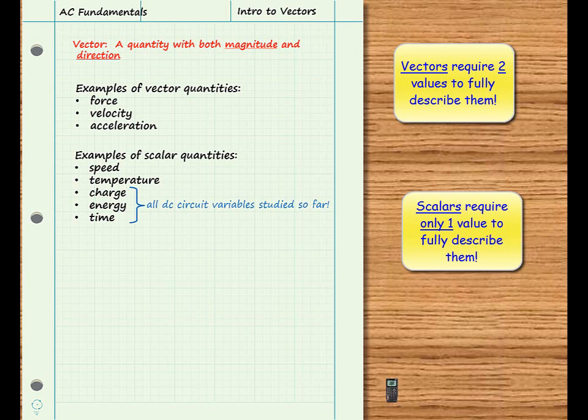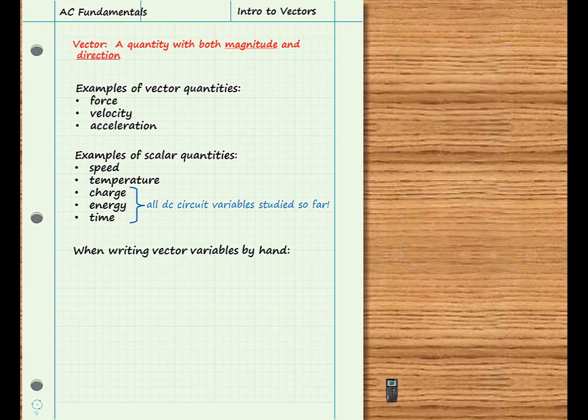Now, we need a way to distinguish scalar and vector quantities when we write them, and there are several conventions. First, for example, if you're reading a textbook, the vector quantities will normally be written in a boldface font. Of course, when we're writing vectors by hand, we can't make boldface fonts easily. So we have a couple of other conventions.